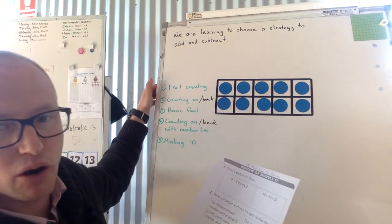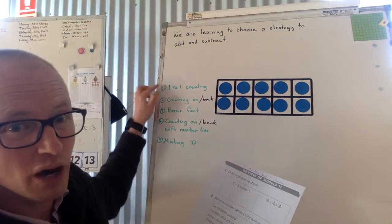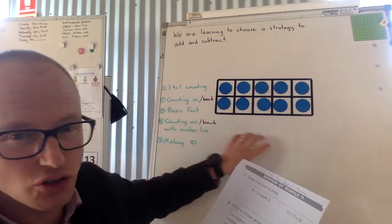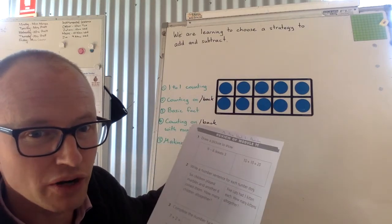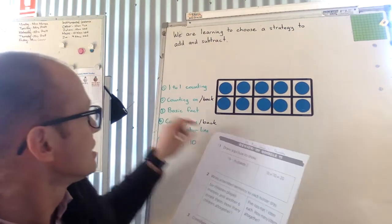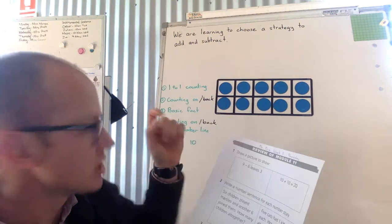You're going to be wanting to think about which strategy is the best one. The one-to-one where you count them all up, counting on where you've got the two groups but you remember what the score of one group is and just count on the next one. Basic facts where you just know it in your head.